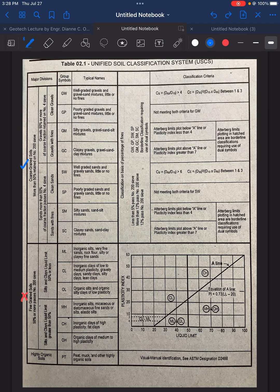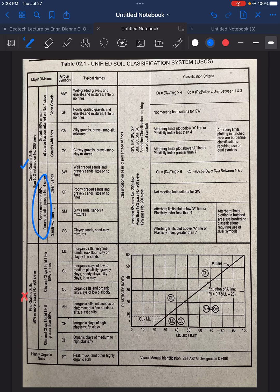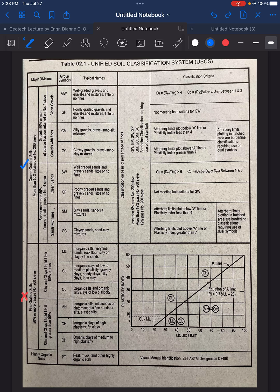Next, we will choose whether it is a sand or a gravelly soil. For sands, for it to be classified as sands, there should be 50% or of course fraction passing sieve number 4. For sieve number 4, we will concentrate here, sieve number 4.